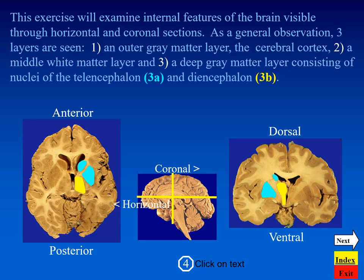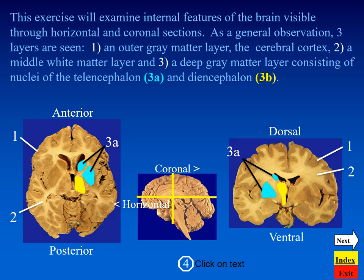When observing horizontal and coronal sections, it can be noted that there are basically three layers of nerve tissue. An outer layer of gray matter — the cerebral cortex — a middle layer of white matter, and a deep layer of nuclear components of the telencephalon and diencephalon.